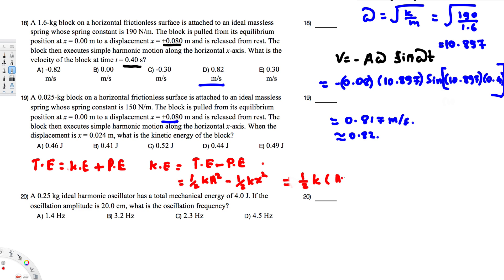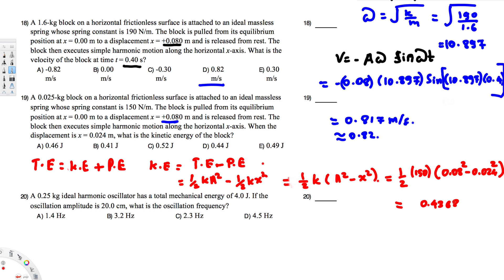We can factor out ½k, giving KE = ½k(A² − x²). Now let's find the value: ½ × 150 × (0.08² − 0.024²). If you calculate this, you get 0.4368 joules, which is approximately 0.44 joules. So the answer is D.